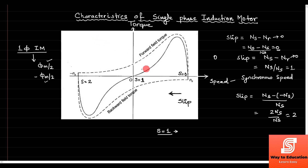If I look at this side of the graph, what is the forward field torque? The forward field torque is greater than the backward field torque on this side. If I calculate the resultant of forward and backward torques, then the resultant torque is in the forward direction. The solid line represents the resultant. With forward field torque greater than backward field torque, the resultant is in the forward direction.